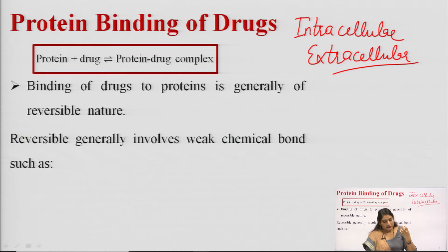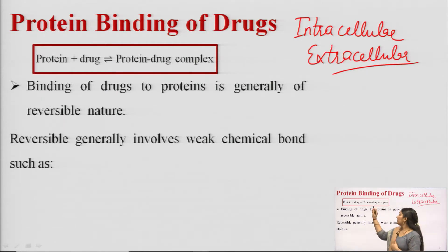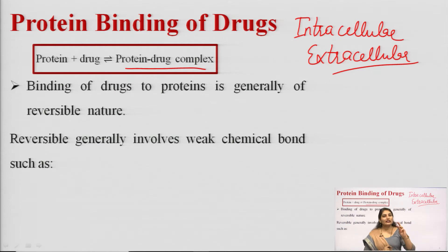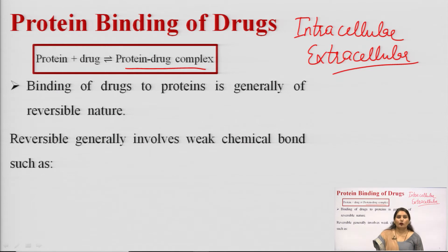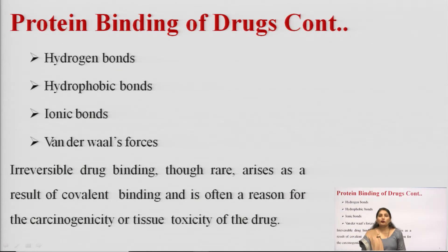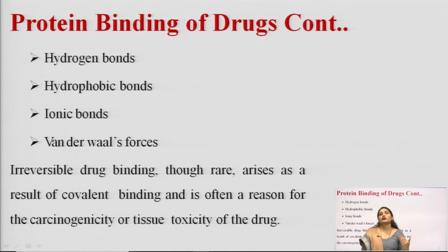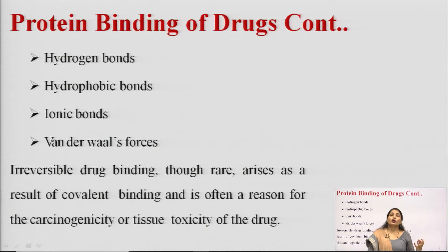The mechanism involved in protein binding results in the formation of a protein-drug complex. This binding is generally of two types: reversible and irreversible. Generally, drug binding is reversible in nature, involving weak chemical bonds such as van der Waals forces of attraction, hydrogen bonds, hydrophobic bonds, or ionic bonds. In rare cases, irreversible drug binding arises as a result of covalent bond formation.